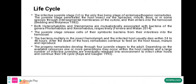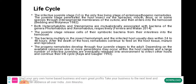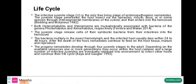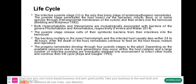The juvenile stage releases cells of their symbiotic bacteria from their intestine into the hemolymph of the host. The bacteria multiply in the insect hemolymph, and the infected host usually dies within 24 to 48 hours.